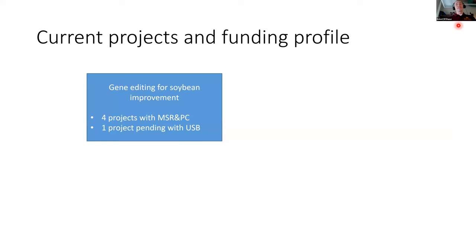I'm supposed to cover the breadth of our program, so I'll give a slide or two covering the landscape of research we're doing and then narrow in on some of the projects. One major area of research is gene editing for soybean improvement — target-specific, trait-specific projects primarily funded through the Minnesota Soybean Research and Promotion Council. We've got four projects currently under this umbrella, most of which are interested in seed composition traits.